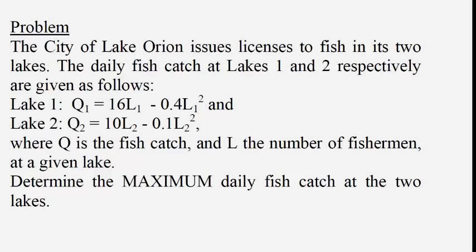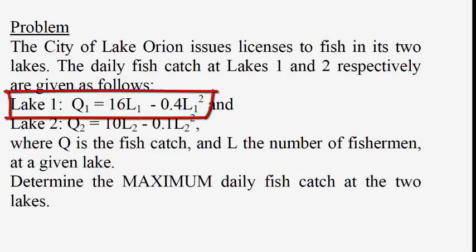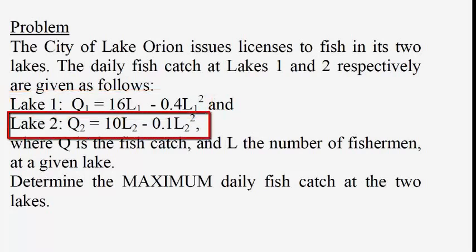The city of Lake Orion issues licenses to fish in its two lakes. The daily fish catch at lakes 1 and 2 respectively are given as follows: Lake 1, Q1 equals 16L1 minus 0.4L1 squared. Lake 2, Q2 equals 10L2 minus 0.1L2 squared. Q is the fish catch and L is the number of fishermen at a given lake. We need to determine the maximum daily fish catch at the two lakes.